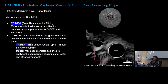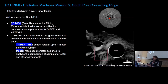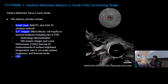Prime 1 is our CLPS lander headed closest to the south pole, targeting the connecting ridge. Prime 1 primarily consists of the Trident drill, paired with a mass spectrometer called M-SOLO. It'll be extracting regolith up to one meter below the surface and analyzing the composition of those samples for water and other components. Also on this lander, they are testing a 4G LTE wireless network, and there's a micro-NOVA SP hopper.